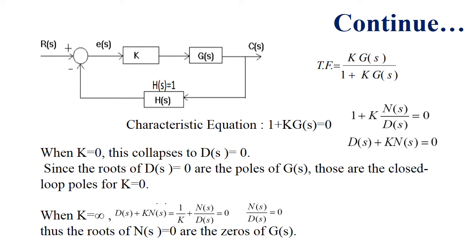When K equals to infinity, we have basically the roots of the numerator, which are the zeros of G(S). In the characteristic equation we have 1 plus K·G(S) equals zero. The value of K does in fact move the roots of the polynomial. The question is: what value of K should we choose to meet the required system performance, having poles in the correct location in the S-plane? This is basically the design of the system, and considers how sensitive the system is to a value of K slightly off from what you have predicted.